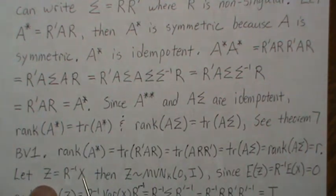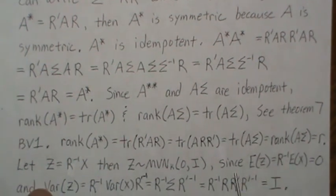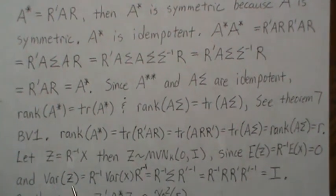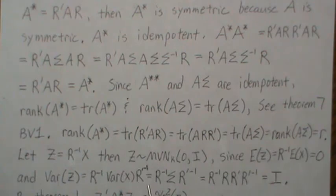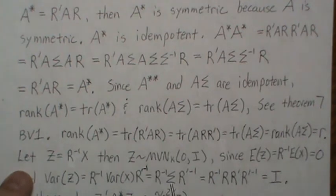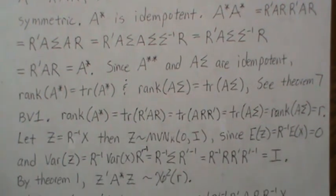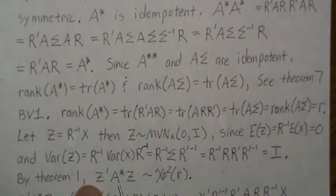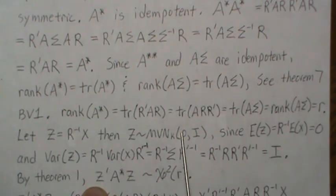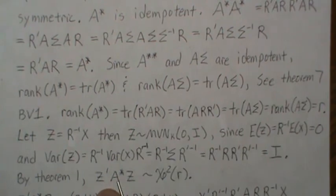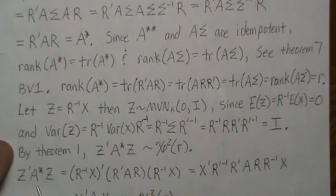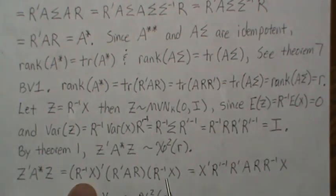Z is a linear combination of normal random variables, so it is normal. The expected value of Z is zero. The variance of Z is R⁻¹ · Sigma · (R⁻¹)' = R⁻¹ · RR' · (R')⁻¹ = I. So Z ~ MVN(0,I). By theorem 1, Z'A*Z is chi-squared with R degrees of freedom, since Z ~ MVN(0,I), A* is symmetric and idempotent with rank R — all the conditions of theorem 1 are satisfied.